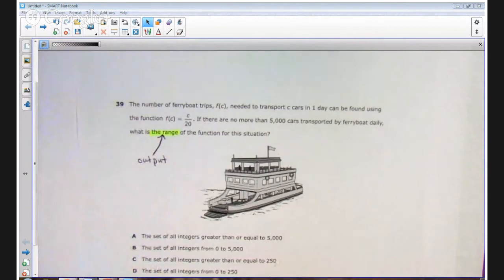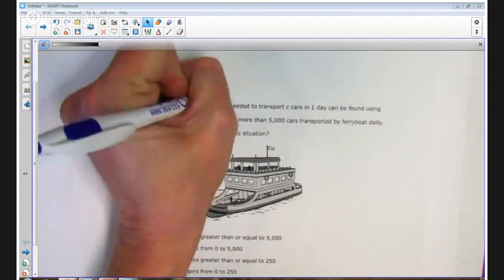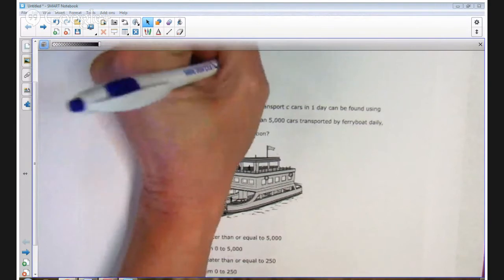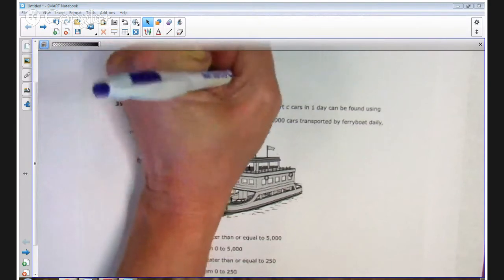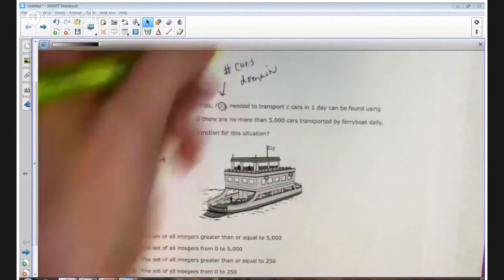The domain would be the input. In this function, the domain would be the number of cars. So we can input the number of cars, C, into the function. Now, the domain is represented by positive numbers, or non-negative numbers, non-negative integers.